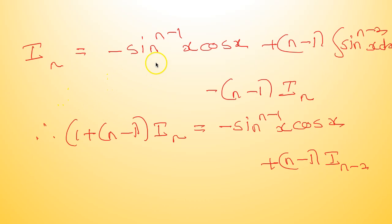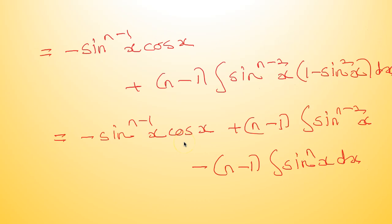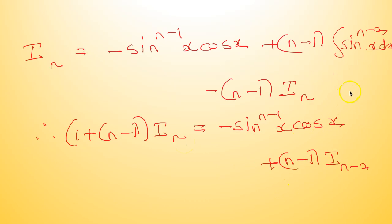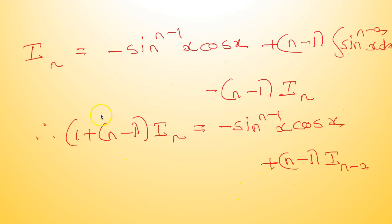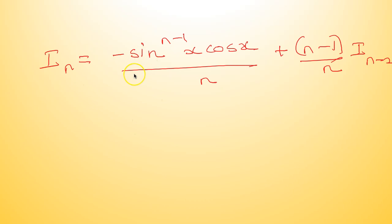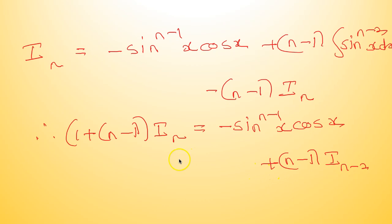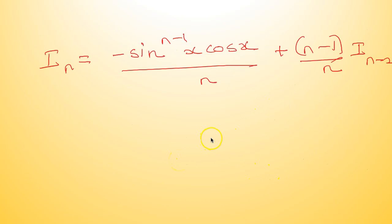So I_n equals minus sin raised to (n−1)x·cos x plus (n−1) integral sin raised to (n−2)x dx minus (n−1)·I_n. Taking the I_n's together: n·I_n equals minus sin raised to (n−1)x·cos x plus (n−1)·I_{n−2}, giving I_n = [−sin^(n−1)x·cos x]/n + [(n−1)/n]·I_{n−2}.